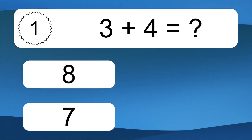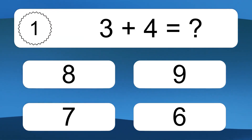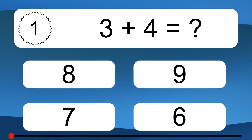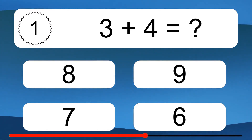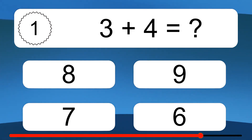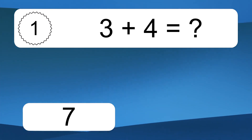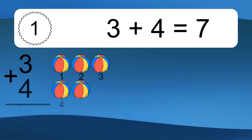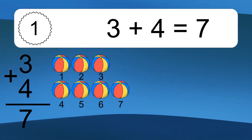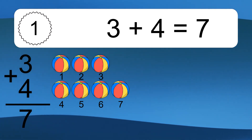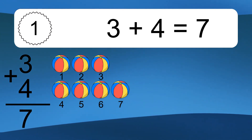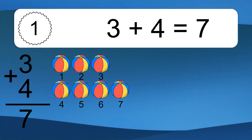3 plus 4 equals what? 1, 2, 3, 4, 5, 6, 7.